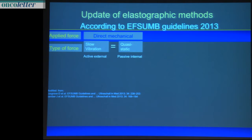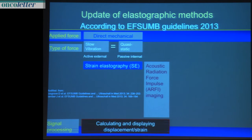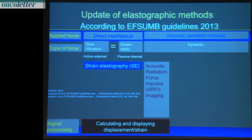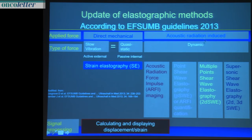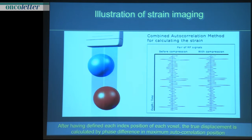Now I want to introduce the new EFSEM guidelines. These guidelines separate the different methods. I will explain strain elastography in more detail. It's important that the displacement of voxels, pixels, and echoes has either a direct mechanical force or an acoustic radiation force as the origin. If the force is acoustic radiation induced, we have several strategies — these are variants of ARFI.